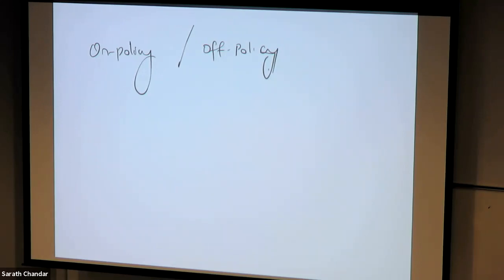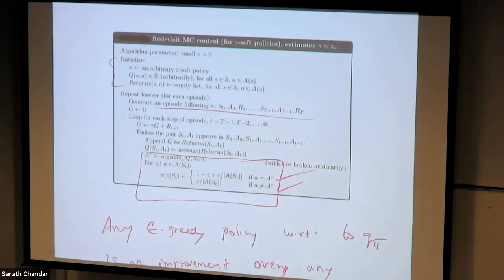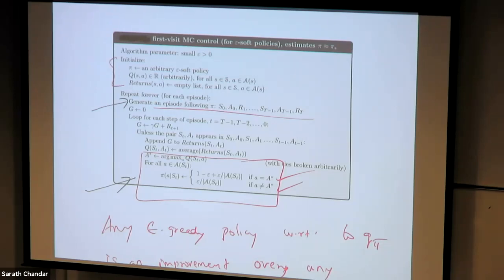On-policy methods — all the algorithms we have seen so far are examples — evaluate and improve the same policy they are using to take actions. In the first-visit Monte Carlo control with epsilon-soft, there is only one policy: it is used both for generating the episode and for improvement. The exploration requirement forces us to work with soft policies because we use the same policy for both data generation and improvement.